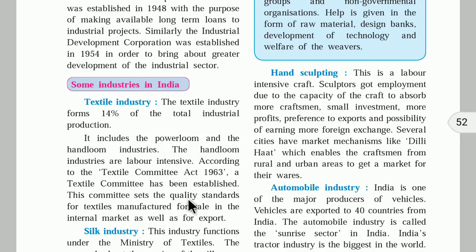The main role of the Textile Committee is to check whether the cloth is of good quality or bad quality — they set quality standards for textile manufacturing for sale in the internal market as well as for exporting goods. Just like an ISI mark on electronic goods guarantees quality, the Textile Committee ensures cloth meets standards before it is available in the market.